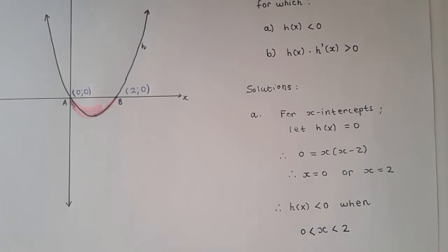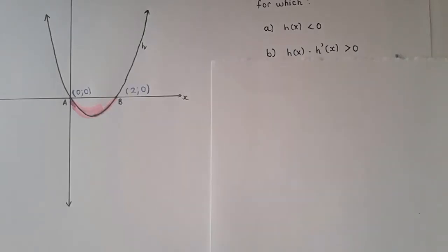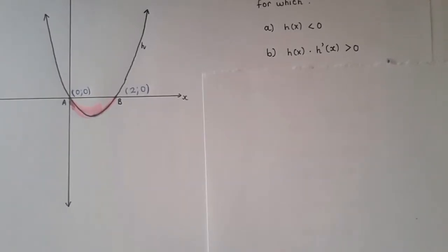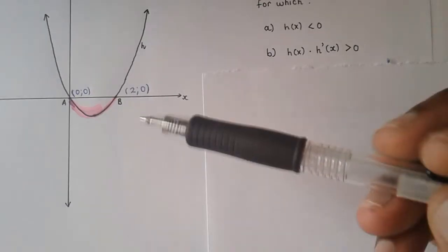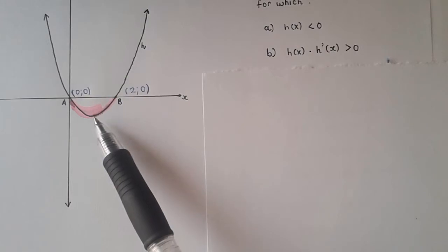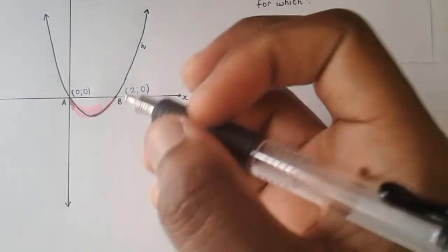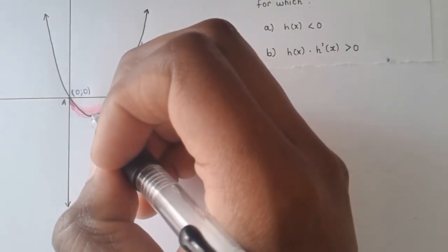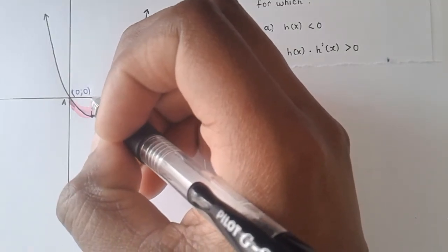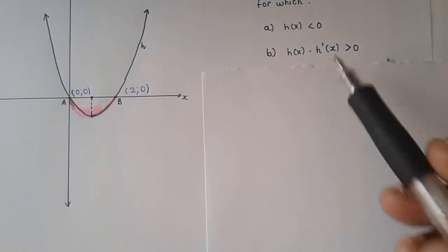Now let's go for part b. We have to introduce another function — h prime of x. There are a few ways to go about this. For me, the first thing I want to do is put onto the sketch the function h prime of x. From calculus, h prime of x is going to be a linear function since it's the derivative of a parabola. Calculus also tells us that at the turning point, that is where the derivative function is going to have an x-intercept.